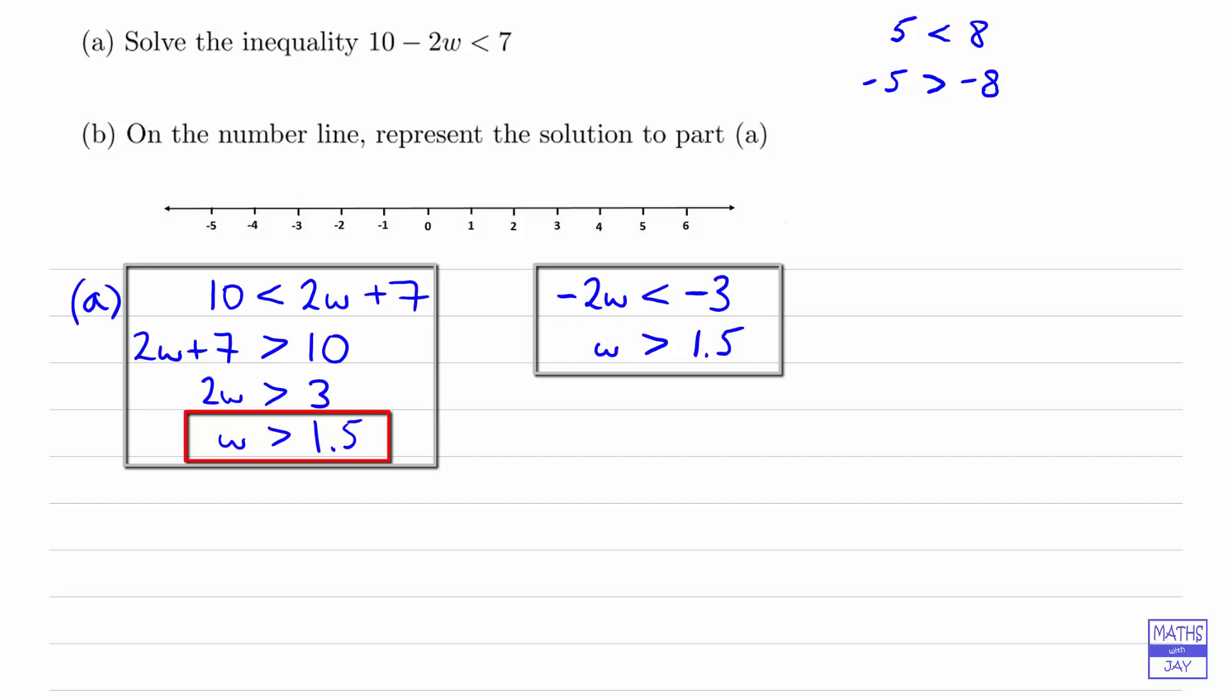And a third method is using the same kind of idea that we've just had to use, because we're going to end up changing the direction of the inequality again. So the third method I would use would be to multiply the whole inequality through by negative 1 as our first stage. So what we're doing is changing the signs of everything. So instead of 10 minus 2w, I'm going to write 2w minus 10.